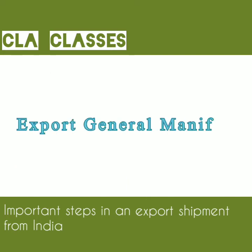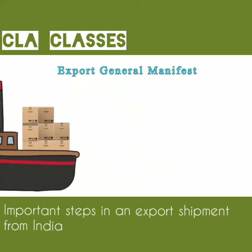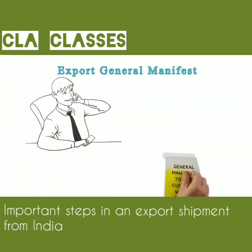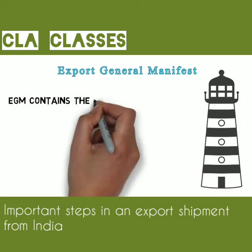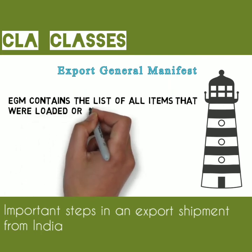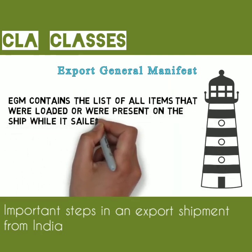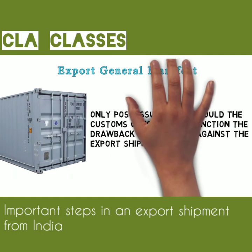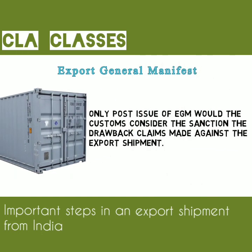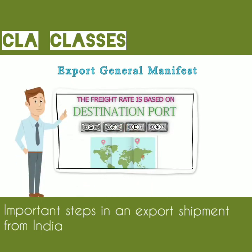Export General Manifest (EGM): Once a ship sails away, shipping lines or their agents furnish the Export General Manifest to the customs within seven days from the date of sailing of the vessel. The EGM contains the list of all items that were loaded or were present on the ship while it sailed from the port. The EGM is the final confirmation of the physical export of the goods. Only post-issue of EGM would the customs consider the sanction of drawback claims made against the export shipment. We will discuss drawback claims in further videos.